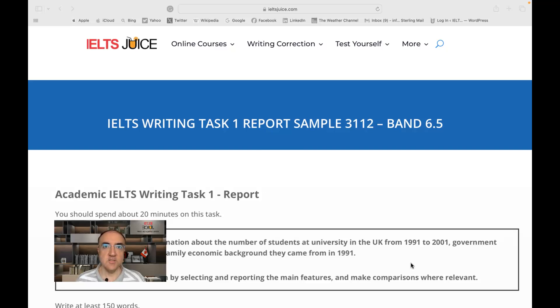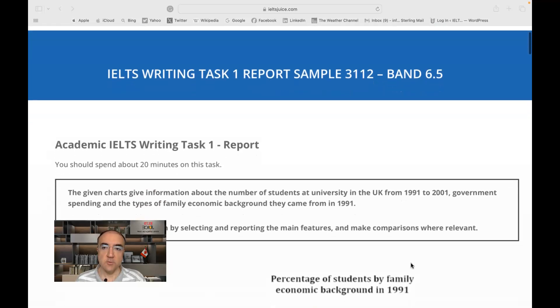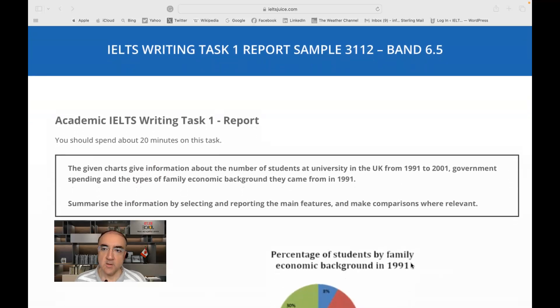Welcome to IELTS Juice. Let's start assessing this writing. So it's a report and the rubric or the prompt says the given charts give information about the number of students at university in the UK from 1991 to 2001, government spending and the types of family economic background they came from in 1991.